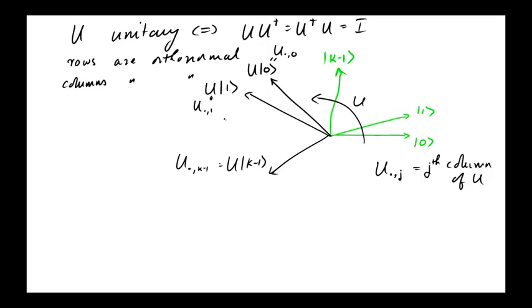So in general, we can say that U preserves angles, or actually more precisely inner products. What I mean by this is that if you start with two vectors φ and ψ and this is the inner product...